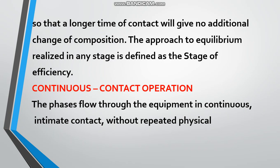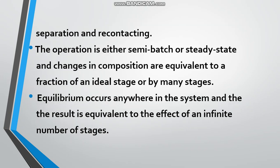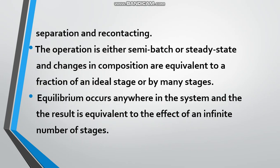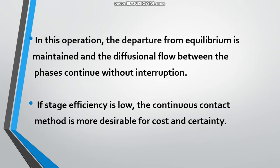Next is continuous contact operation. The phases flow through the equipment in continuous intimate contact without repeated physical separation and re-contacting. This operation is either semi-batch or steady state, and changes in composition are equivalent to a fraction of an ideal stage or many stages. Equilibrium occurs anywhere in the system and the result is equivalent to the effect of an infinite number of stages. The departure from equilibrium is maintained and diffusional flow between the phases continues without interruption.